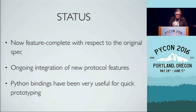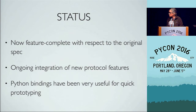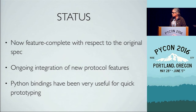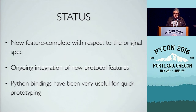Current status: we're now feature-complete with respect to the original API spec, and we've got ongoing integration of new protocol features as they're being issued by the IETF. One of the things we've been really happy about using Python for is that it's been incredibly quick to prototype new DNS protocol features — on the order of hours, you can sit down at the REPL, construct a packet, and push it out. That's been a really wonderful feature.